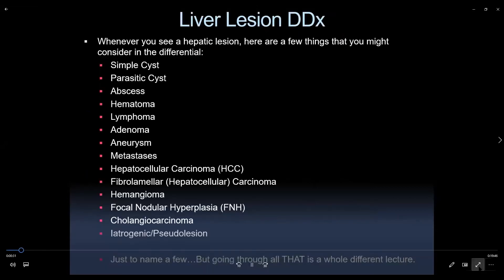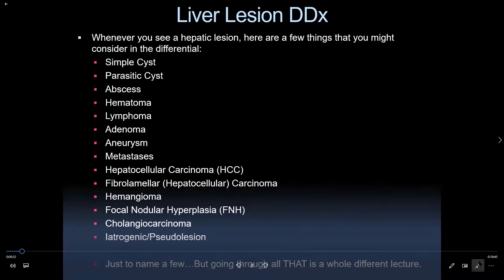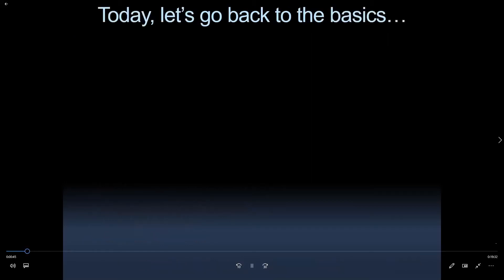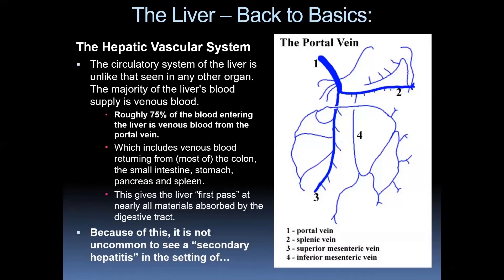Liver lesion differentials: whenever you see a hepatic lesion, there are many things to consider in the differential — and these are just a few. Going through all of that is a whole different lecture. Today I want to get back to basics in the liver. Let's talk about the hepatic vascular system first and foremost.